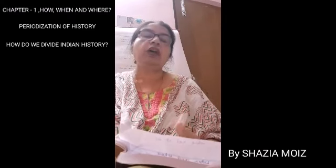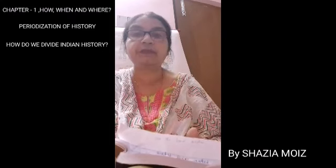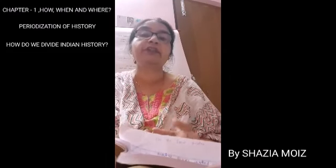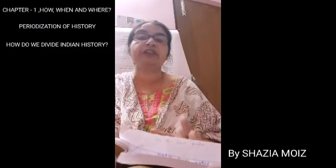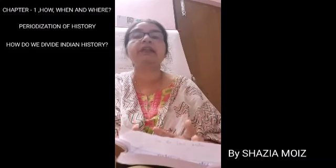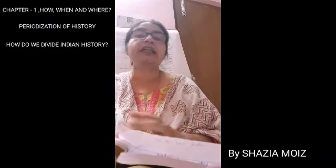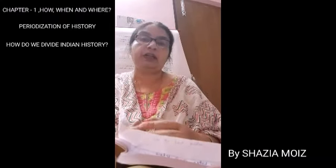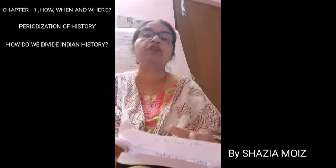How do we get information about the past or about the British period? The British believed in preserving official records. The practice of writing and record-keeping started during the British period. They collected and preserved all important documents, policies, and agreements, which were kept in special rooms like archives and museums. They also attached record rooms to all administrative institutions like the collector's office, provincial secretariat, and law courts.